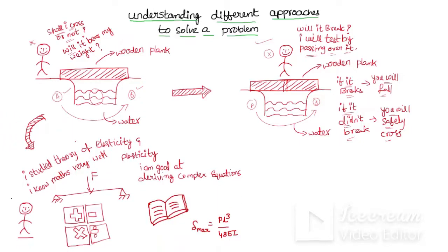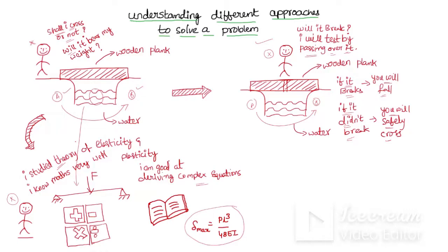In the second scenario, suppose you have studied a lot of theory — elasticity, plasticity, solving differential equations, integral equations, partial differential equations, and various formulas. You convert the system into a mathematical model, take some assumptions, derive complicated equations, solve them, and using the resulting formula along with your known weight values, find the answer to whether you should cross.